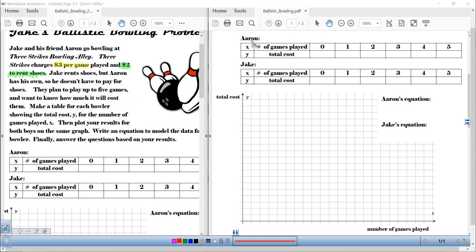So let's start with Aaron. Remember, Aaron was the one who has his own shoes. So for Aaron right here, if he bowls zero games, then he pays $0. Does that make sense? Zero games is $0. Now, the first game he plays is going to cost him $3. And then the second one, remember, this is the total cost here, right? So we have that first game was $3 and the second game was $3. So the total cost is $3 plus $3 or $6. Three games is going to be $9. Four games is going to be $12. And five games is going to be $15. So if I were to ask you, is this a proportional relationship, does Y divided by X equal the same thing every time? The answer is yes.